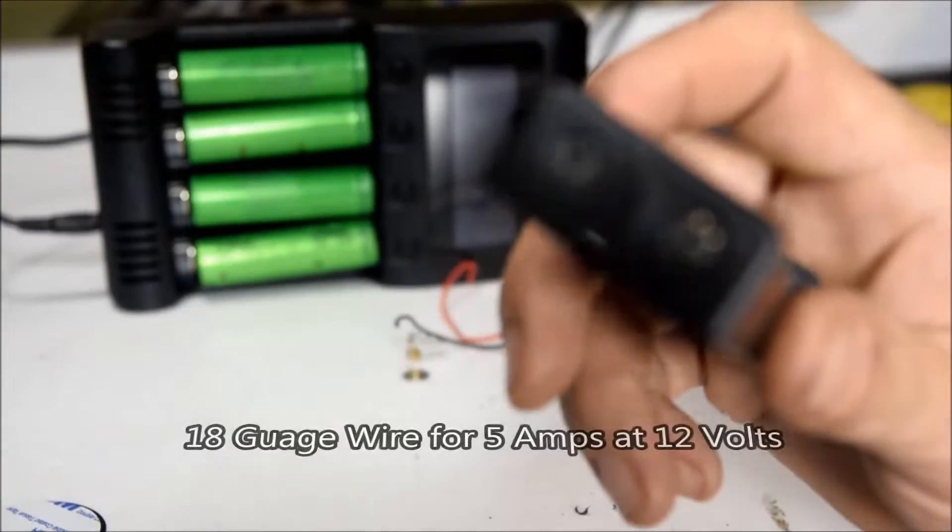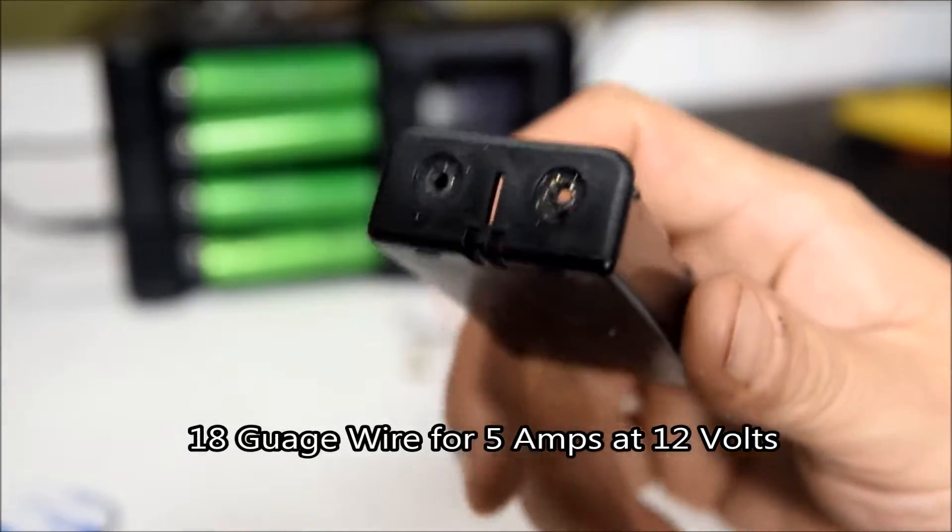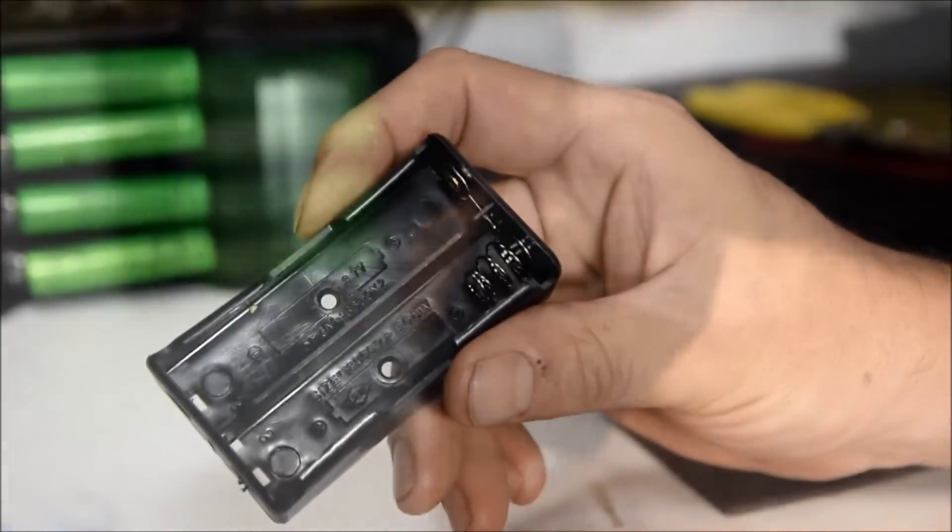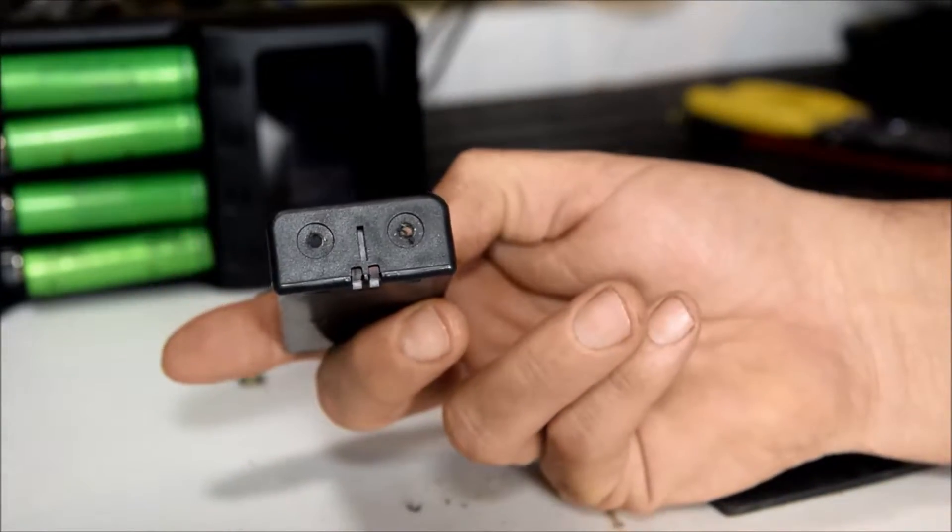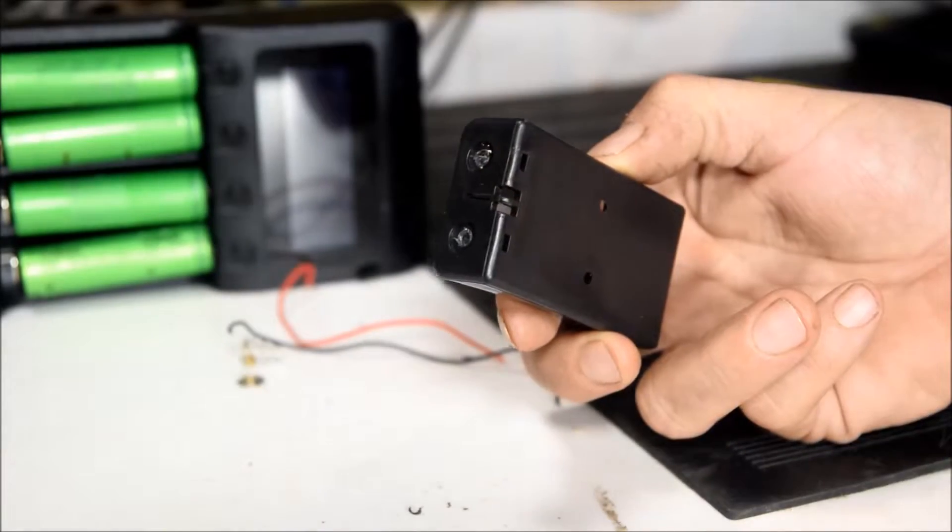The barrel plug adapters have 18 gauge wire. The 18 gauge wire is good for up to 5 amps. And what I'm showing you here is the holes where the connection wires go through.